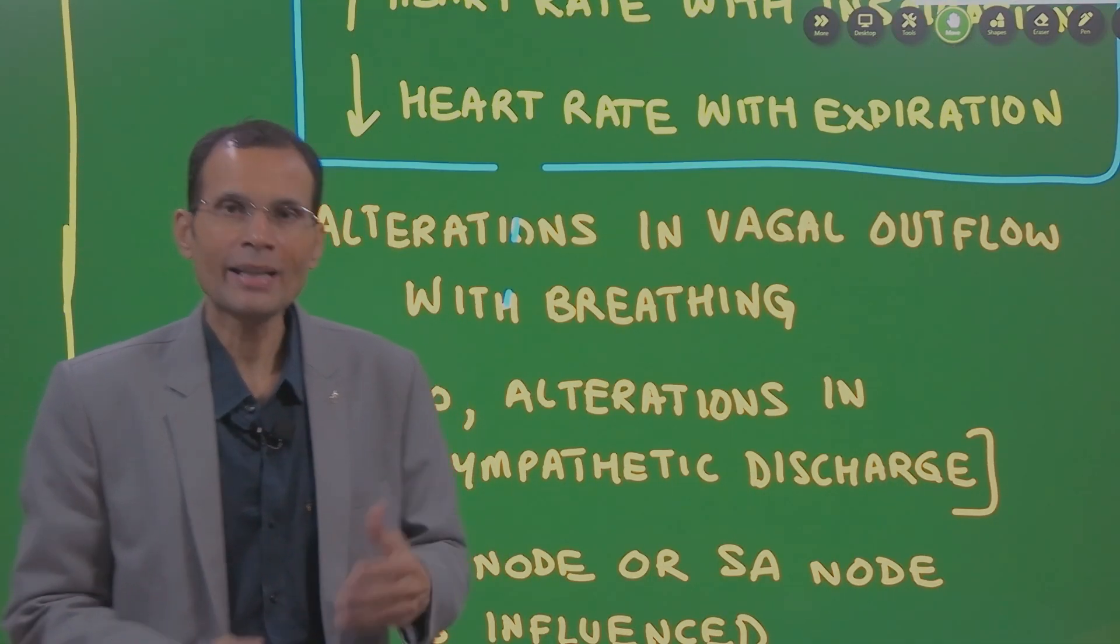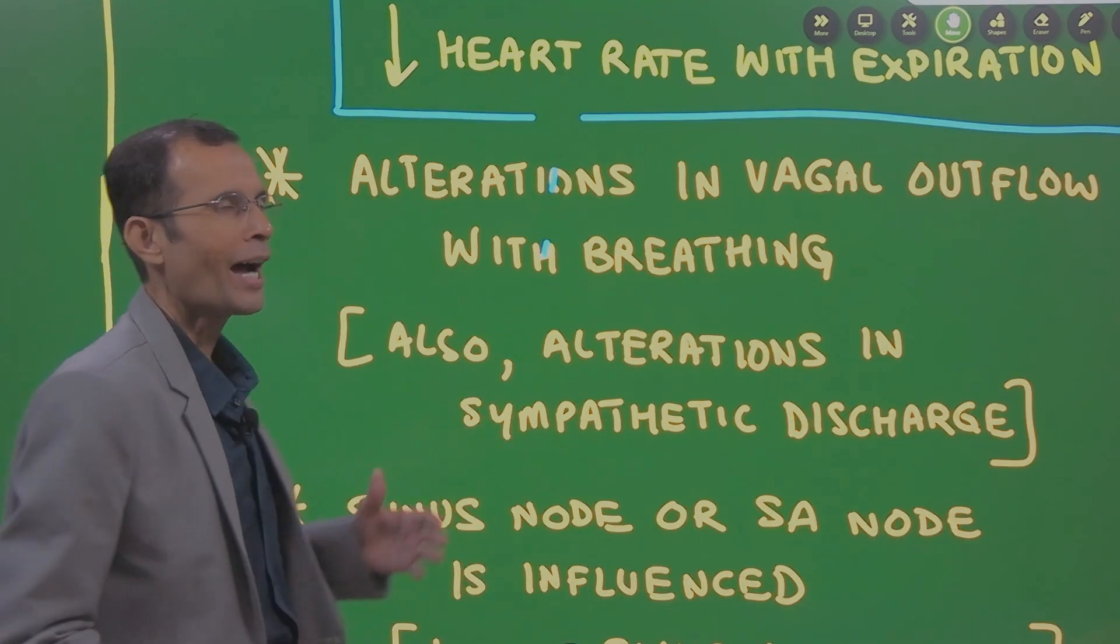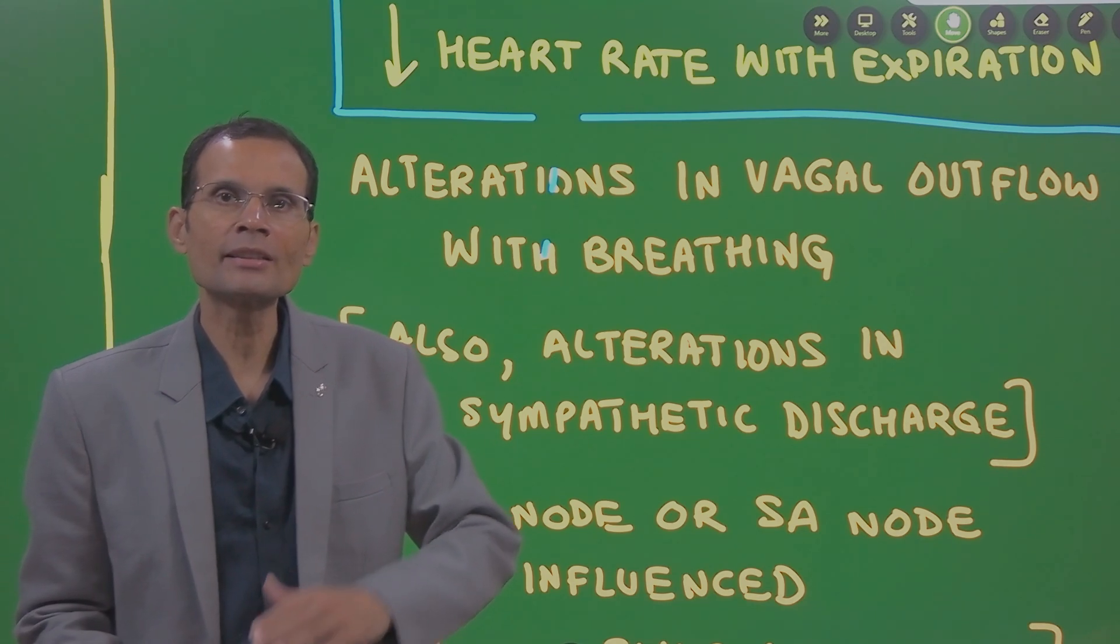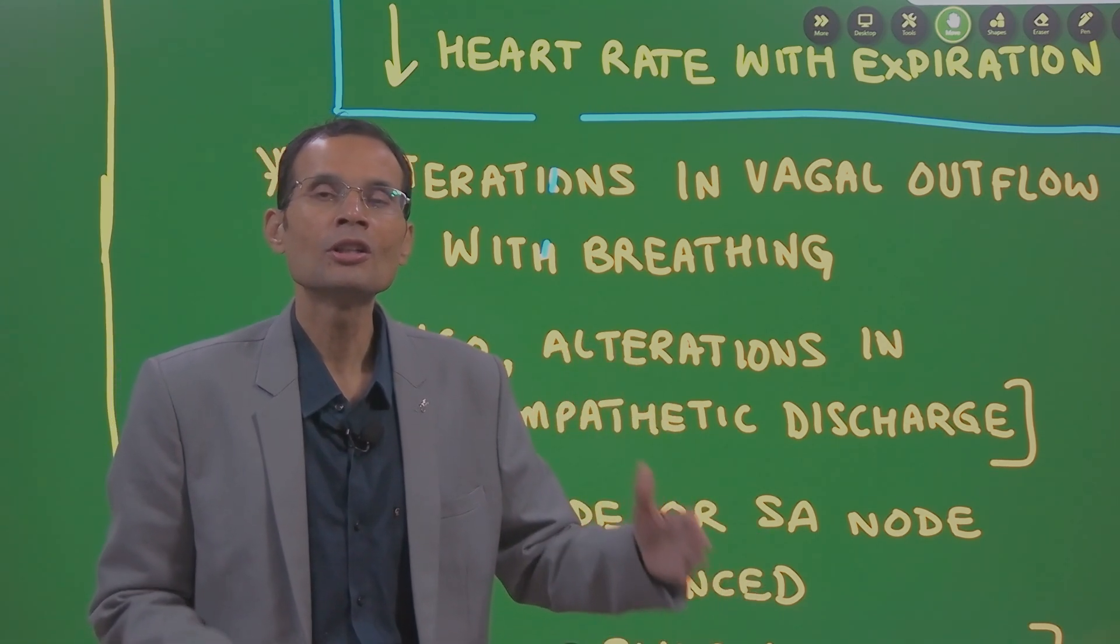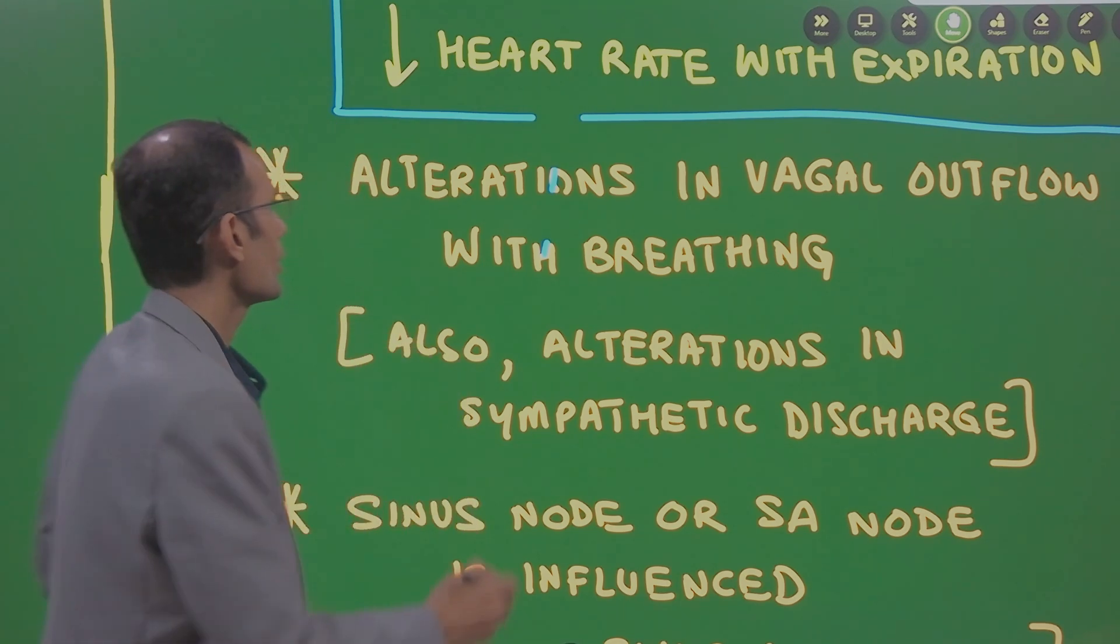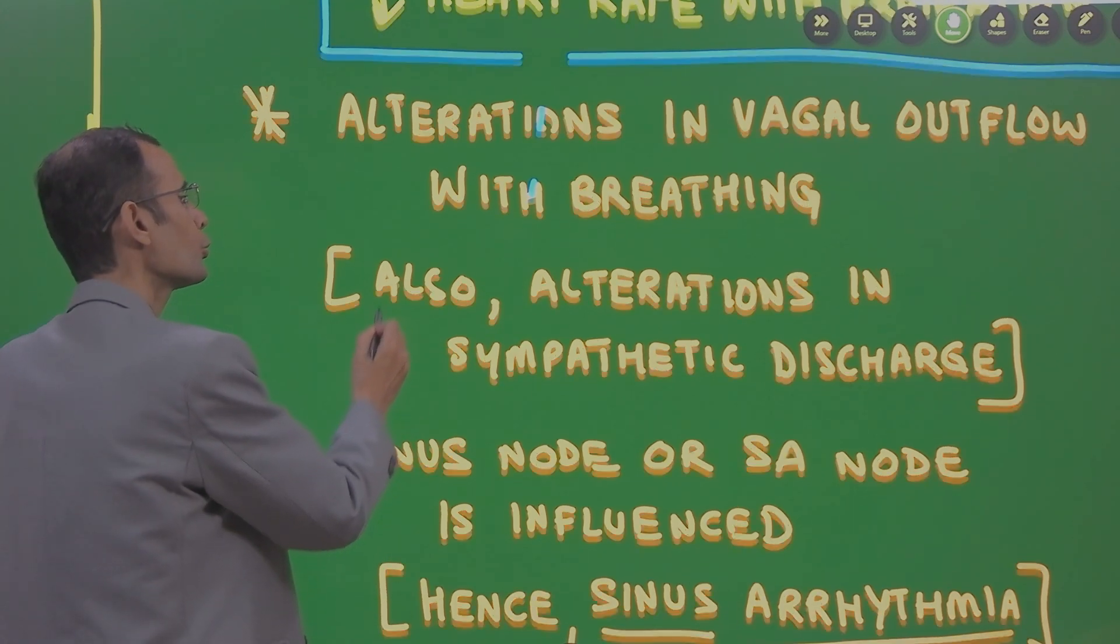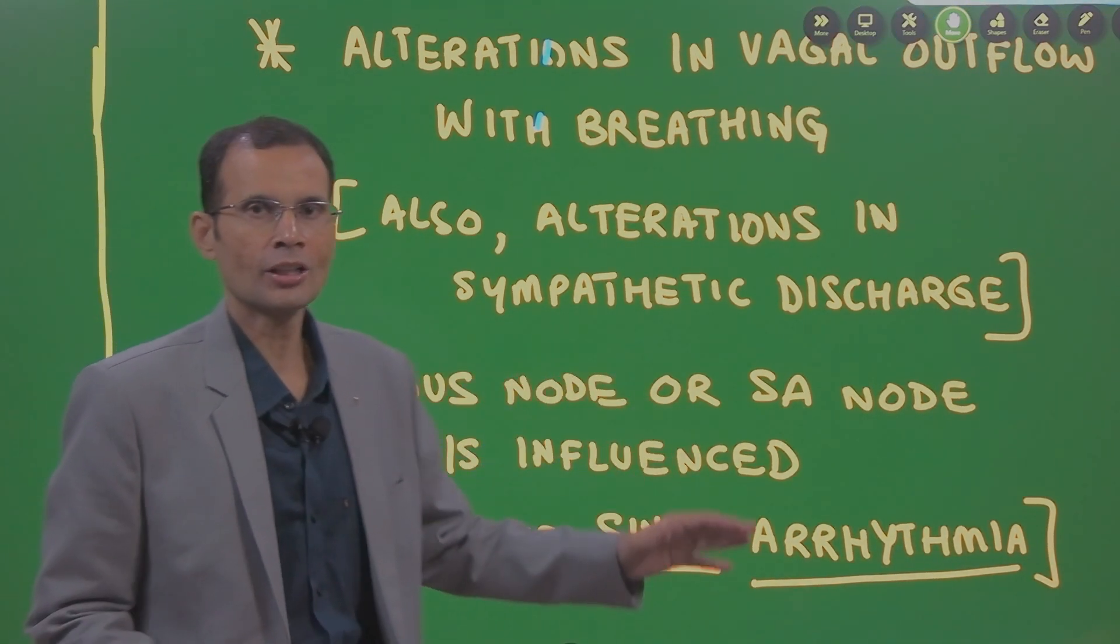Now, what is the mechanism? Why does that happen? It is because of alterations in the sympathetic and vagal outflow that occur with the respiration. There are changes in the vagal outflow, vagal discharge and also to some extent the sympathetic discharge.